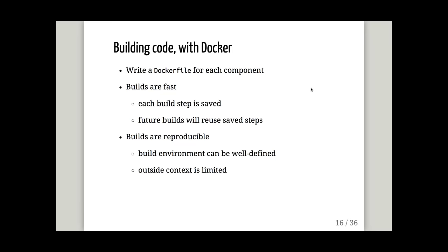With Docker we address this by combining the advantages of both scripts and config management systems. When you want to build a component, you write a Dockerfile. A Dockerfile is a recipe to build a container image, and it looks a lot like a shell script — a list of instructions to execute. The key difference is that the Dockerfile also specifies the initial state: start with an Ubuntu 14.04 image, or Fedora 21, or CentOS 6.5. By defining the initial state, you know exactly what will happen later and don't have to worry about which distribution you're on.